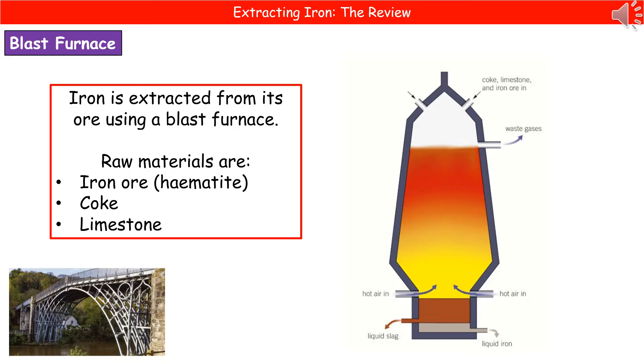When we need to extract iron, we use a piece of equipment called a blast furnace. There's a diagram of that on the right there. We start off with three raw materials: the iron ore, also known as hematite, coke, and limestone.